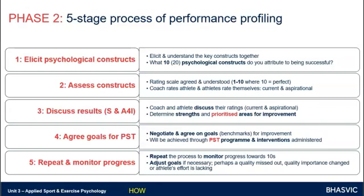Phase two is the five-stage process of performance profiling — learn it as that five-stage process. The first thing you need to do is elicit the psychological constructs or qualities that are most important within their performance and their sport. What 'elicit' means is draw out with them — discuss and agree on what you think you need to focus on. Is it confidence? Is it motivation? Is it assertiveness? Is it leadership? Decide on the main psychological constructs. There's some suggestion you learn around 10 to 20 — between 10 and 20 psychological constructs that you agree are really important to perform well psychologically in your sport.